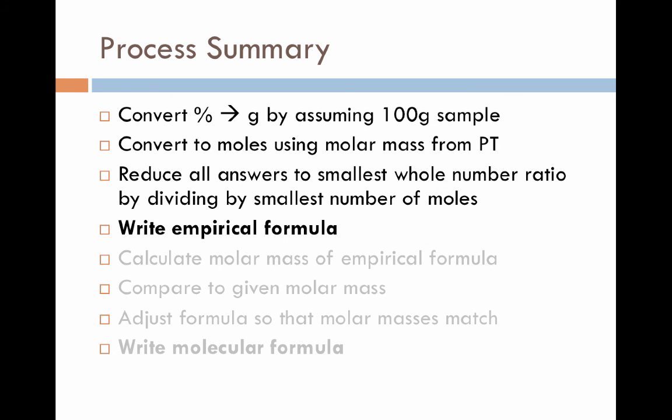If you're the kind of person that likes to see these things written out in discrete steps, that's exactly what I have here. You'll notice some steps are grayed out. Those are ones we have not yet talked about and will be covered in a later video. First, we convert our percentages into grams, assuming a 100-gram sample, basically drop the percent sign and replace it with a G. We convert those answers to moles using the molar mass from our periodic table, and then we reduce all our answers to a smallest whole number ratio by dividing by the smallest number of moles. That information eventually gets transferred into writing an empirical formula. In the next video, we'll talk about translating this empirical formula into a molecular formula.